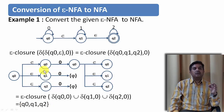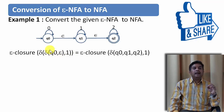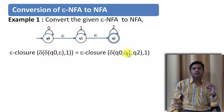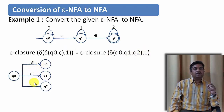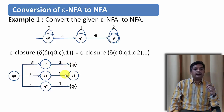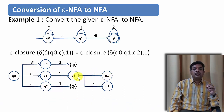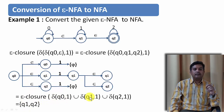Now let us find the Epsilon closure on input symbol 1 at state Q0. The Epsilon transitions from Q0 give us Q0, Q1, and Q2. On input symbol 1: Q0 on 1 is undefined, Q1 on 1 is Q1, Q2 on 1 is undefined. Then taking the Epsilon closure of Q1 gives Q1 and Q2. So the Epsilon closure of delta(Q0, 1) = {Q1, Q2}.